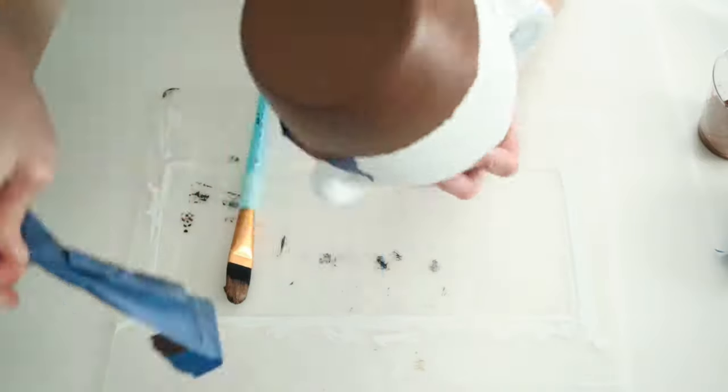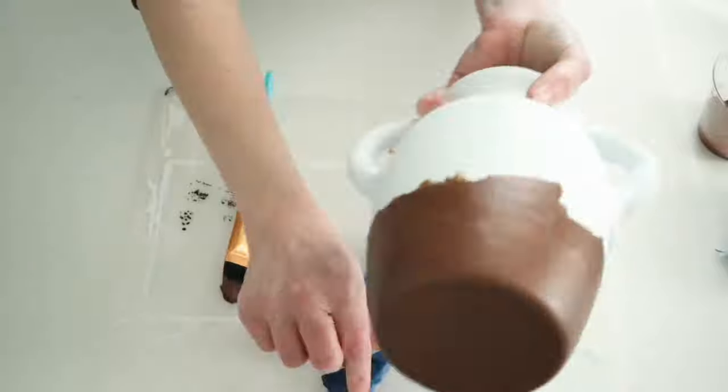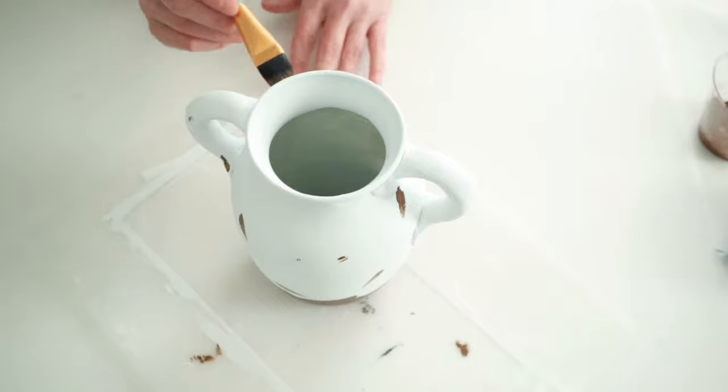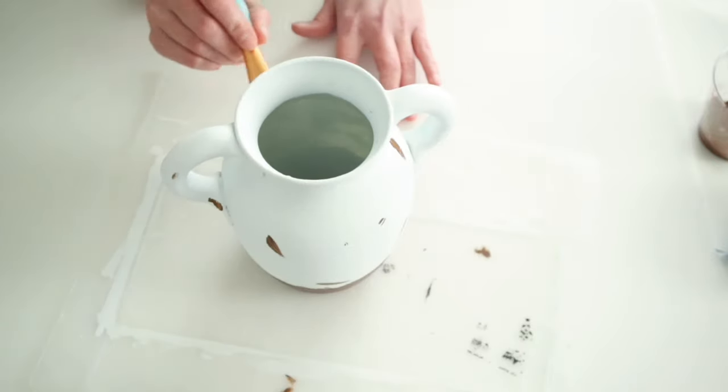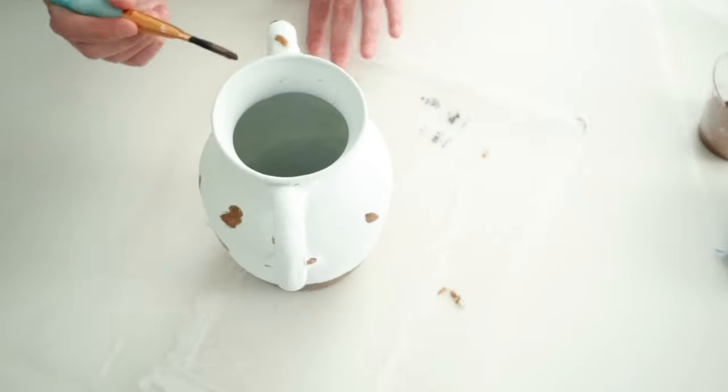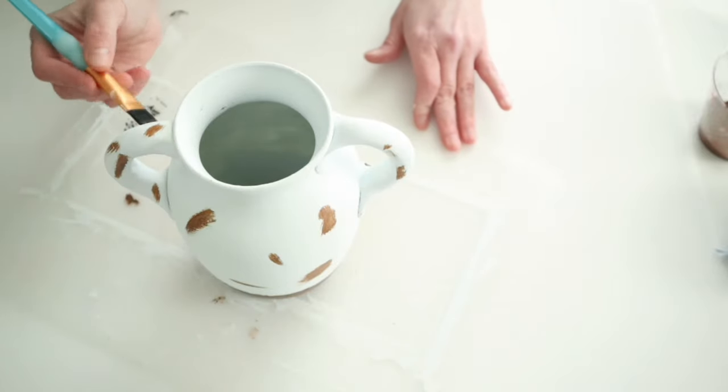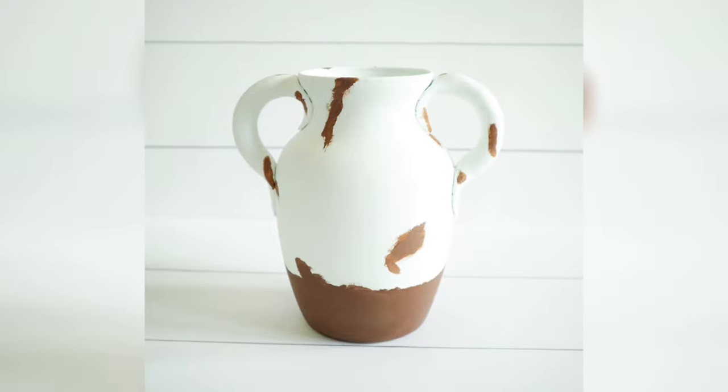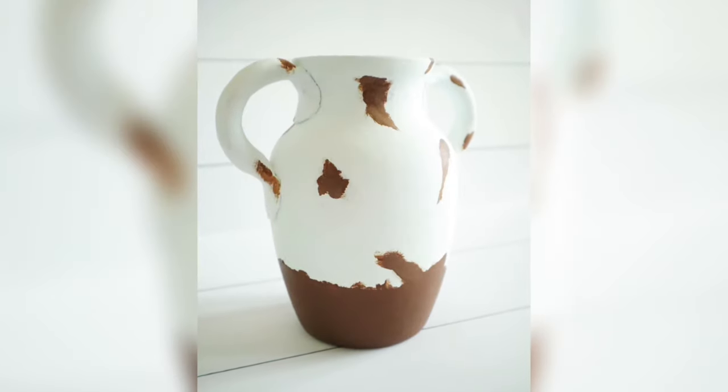And when you remove the painter's tape, then you're going to be left with this abstract design that looks similar to the pottery barn version. Then all that was left to do was just kind of take that same paint and put a few marks on the vase. And don't worry if you add too many, you can always just paint over it with the white. And if you don't add enough, then you can just add in a few more. And here's how the vase turned out.